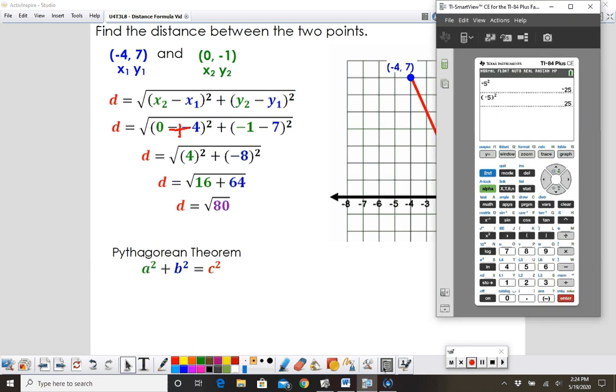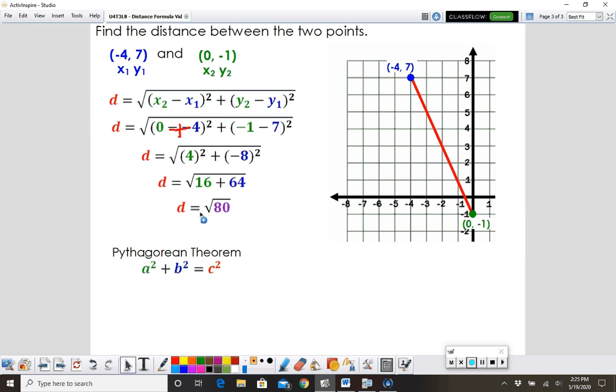This again is our second little glitch here, but we've done these before. If you take your square root of 80, you're going to see you get a big long decimal. Just round it to the nearest tenth. So the distance here would be 8.9.